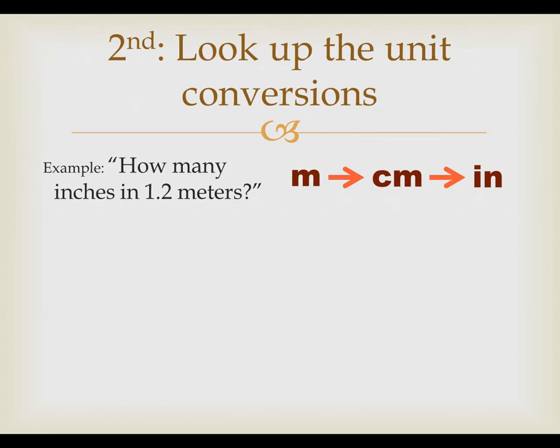Now for the second step, we look up those unit conversions. This is something where we're going to have to look it up on some resource, either a chart, a table, the back of the book, online, something that will tell us how many of one thing is in another thing. For example, in 1 meter is 100 centimeters, and maybe you already know that. And in 1 inch is 2.54 centimeters. These two unit conversions allow us to travel the path from meters to centimeters to inches.